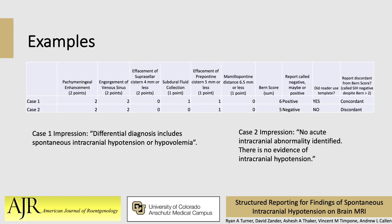Here is an example. On the left of the table it shows how the burn score from the blinded reader was noted, followed by the impression from the original read, and then an assessment of the concordance. Example one shows a concordant result with a high probability burn score by the blinded read and an original read indicating a differential diagnosis that includes SIH. Example two shows a discordant result with a high probability burn score and an original read that indicated no evidence of SIH.